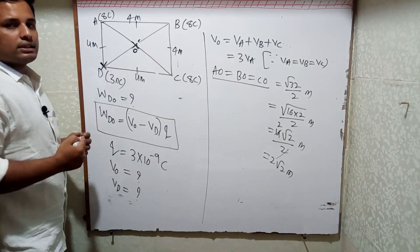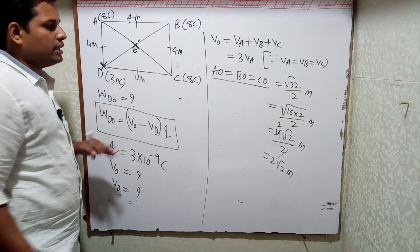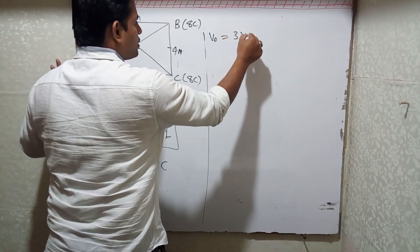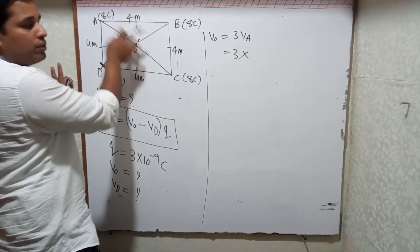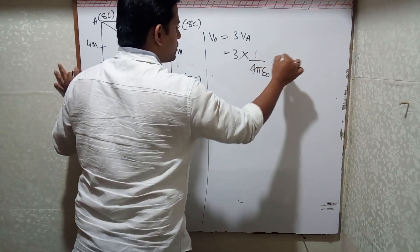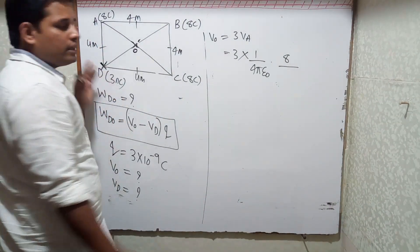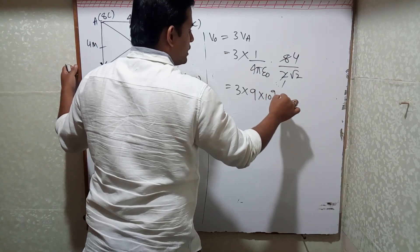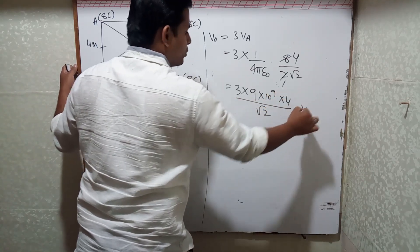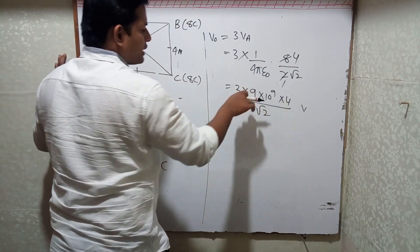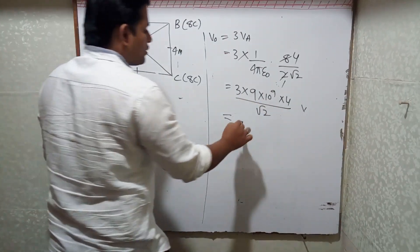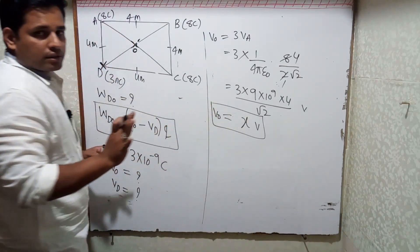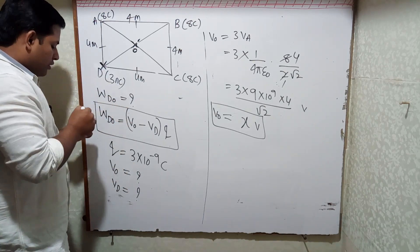Now let us calculate V_O. V_O = 3 × V_A = 3 × (1/4πε₀) × (8 / 2√2). Since 1/4πε₀ = 9 × 10⁹, this becomes 3 × 9 × 10⁹ × 4 / √2. Three fours are 12, twelve nines are 108 — substitute √2 = 1.414 and calculate. Let's call this value x volts. Please pause the video, calculate V_O, then we'll proceed.